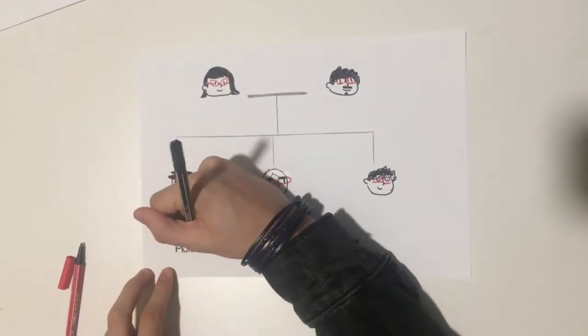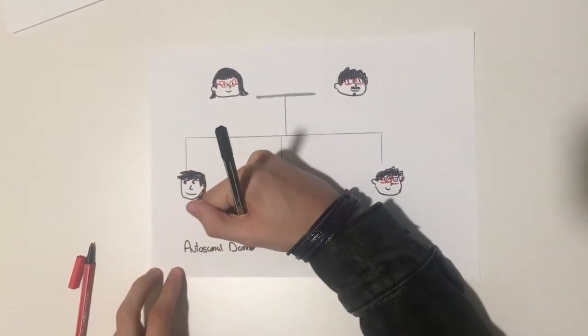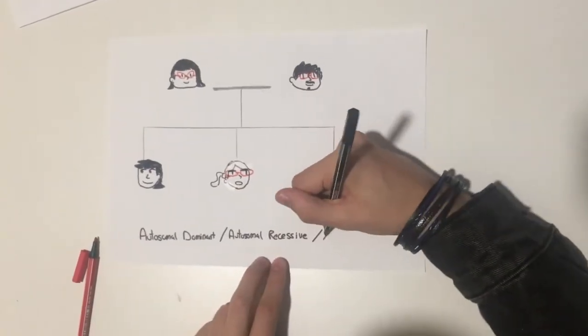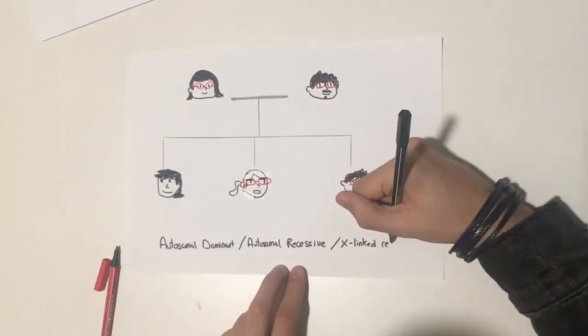High myopia is often found to be transmitted through families in Mendelian patterns including autosomal dominant, autosomal recessive, and X-linked recessive inheritance.